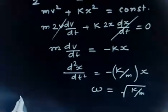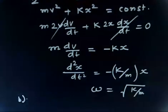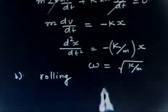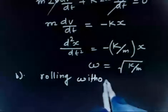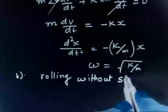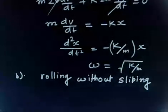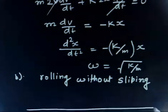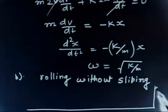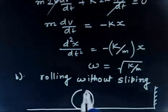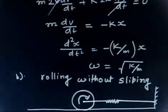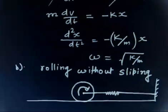Now part B says this time the cylinder rolls on the surface without slipping. So this is the important part — rolling without slipping. In this case the cylinder is rotating, and because the rolling is pure, it follows V = Rω.